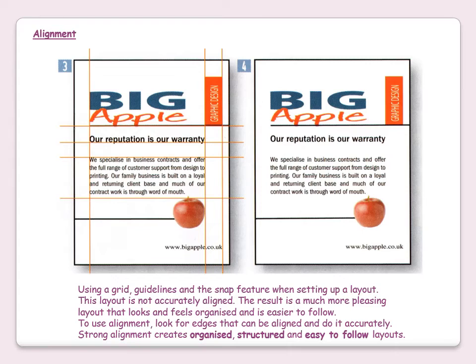In this example, you can see strong left alignment between the left-hand edge of the heading, the left-hand edge of 'apple' and the left-hand edge of the body text. In addition to that, there is strong right alignment between the left-hand edge of the graphic design box, the right-hand edge of the subheading, the right-hand edge of the body text and the right-hand edge of the apple.